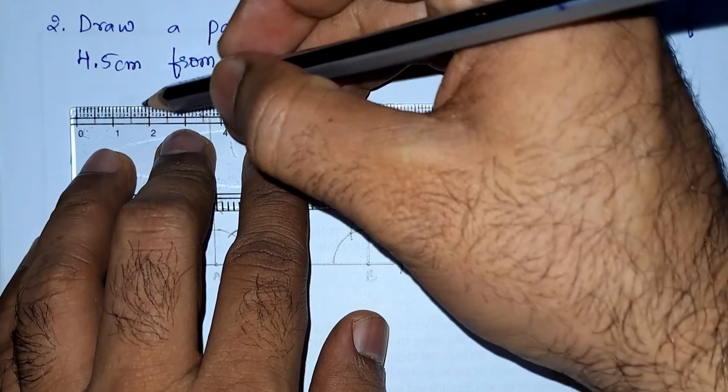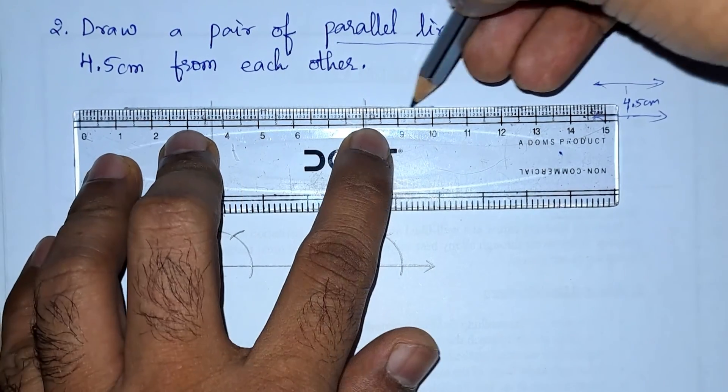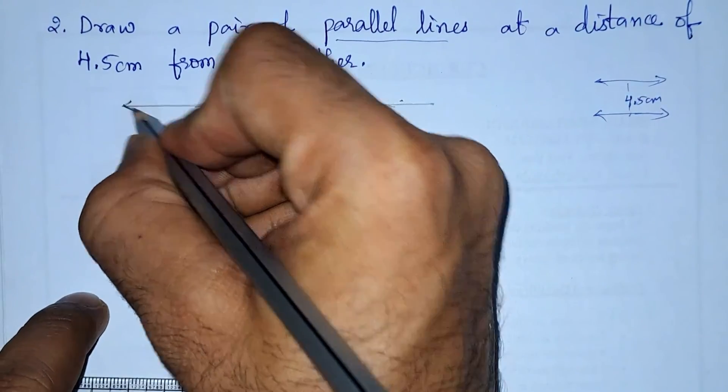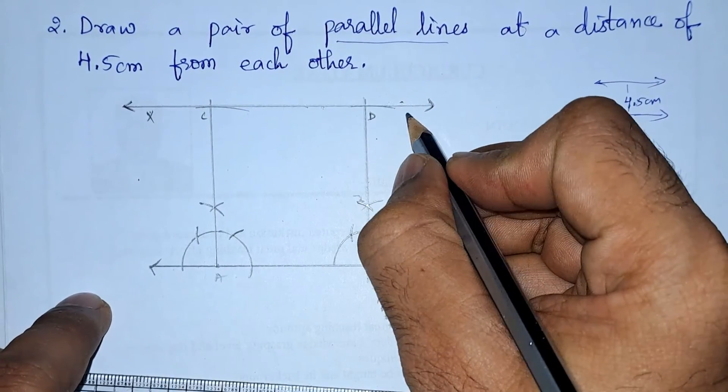We will get the required line, the required parallel line. So this is—let this be XY.